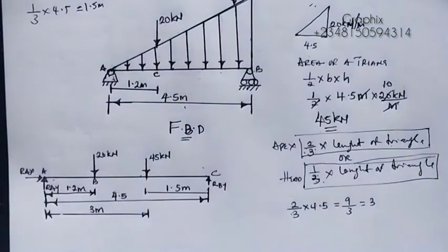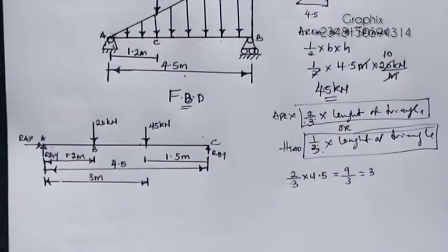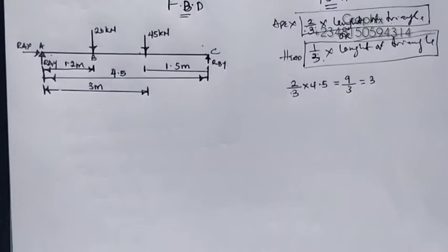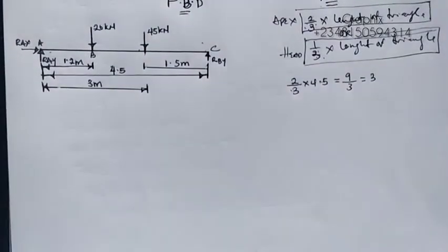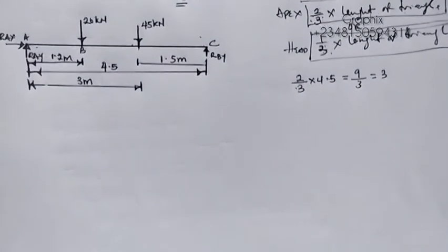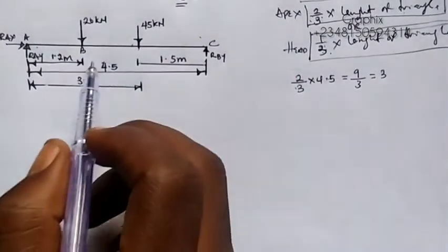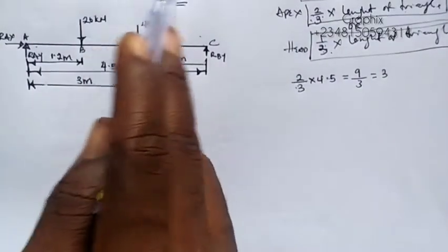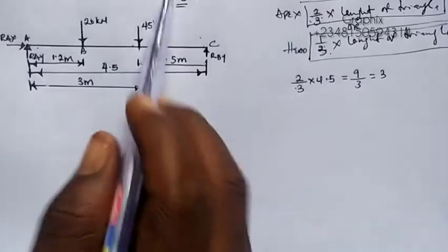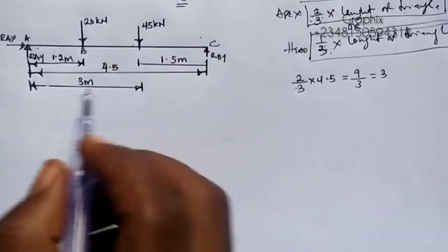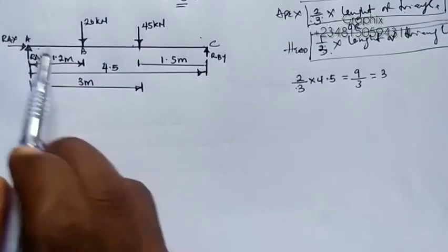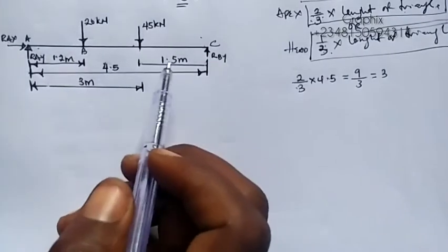Now we'll move forward. We have successfully converted the UVL into a point load. The next thing we're going to do is calculate for the reactions. We want to know what RAX, RAY, and RBY are.